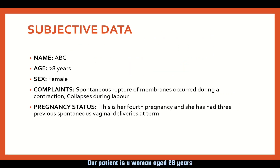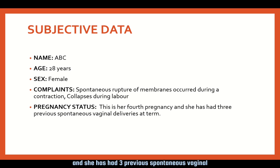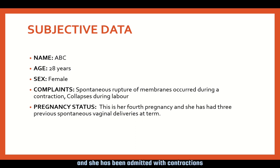Our patient is a woman aged 28 years. She suddenly collapses during labour. This is her fourth pregnancy and she has had three previous spontaneous vaginal deliveries at term. This pregnancy has been uncomplicated and she has been admitted with contractions at 37 weeks and 6 days.